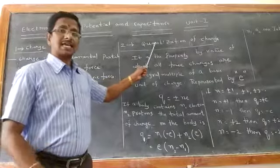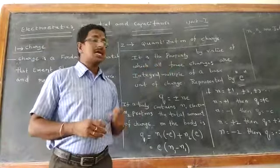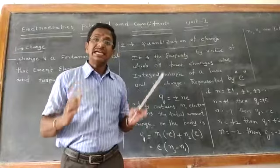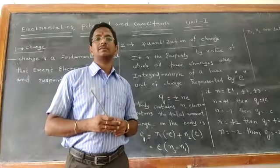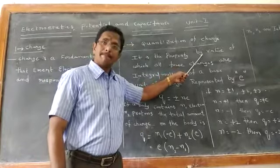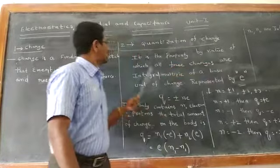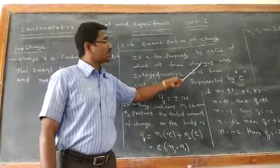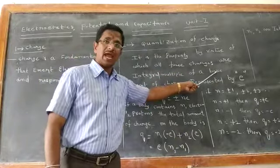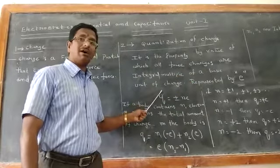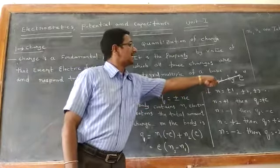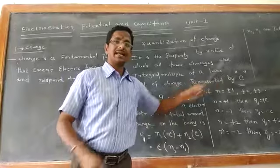The second concept is quantization of charge. The quantization of charge means it is an integral multiple of an electron. It is the property by virtue of which all charges are integral multiples of a basic unit of charge, which is represented by E.